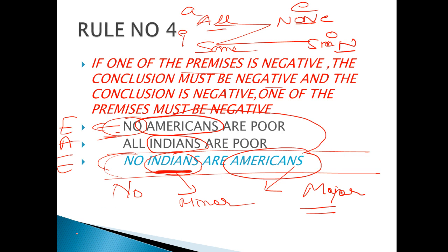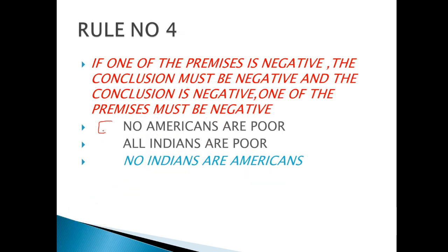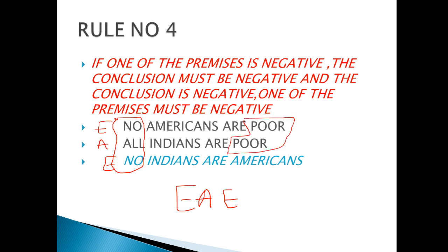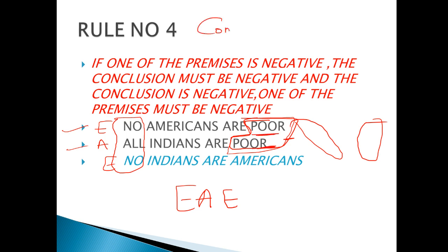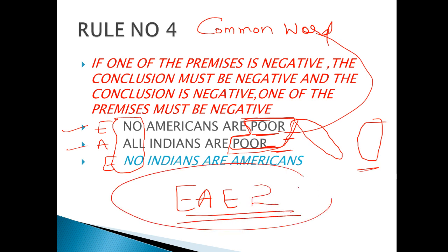तो E, A, E — mood हमें पता लग गया। अब हमने देखनी है figure। Figure हमें कहाँ से पता लगती है — अपने middle term से। Middle term में यह दोनों last में हैं, that is right side पर। तो figures को revise करें: दूसरी figure होती है right side पर। Middle term — that is 'poor' — common word है। यह right side पर है, तो यह हमारी second figure होती है: E, A, E, 2।